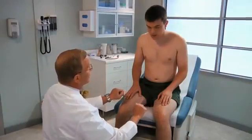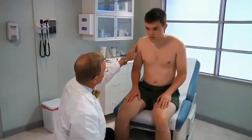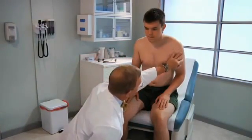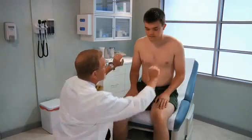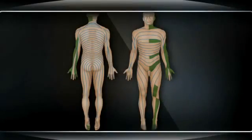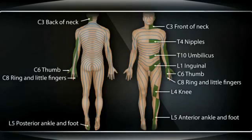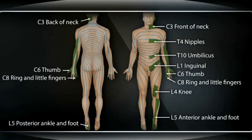By identifying the distribution of sensory abnormalities and the kinds of sensations affected, you can infer the location of causative lesions. To help localize neurologic lesions, the body is commonly mapped into dermatomes, which are skin bands innervated by the sensory root of a single spinal nerve. It is helpful to familiarize yourself first with key dermatomes — for example, T4 at the nipple line, T10 at the umbilicus, and L5 at the anterior ankle and foot.